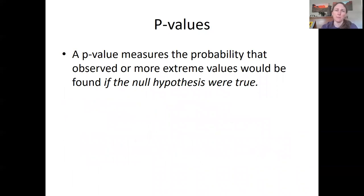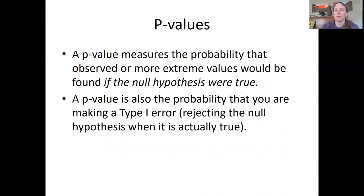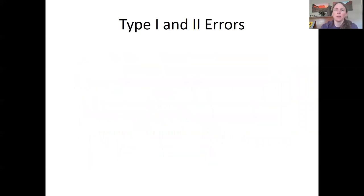A p value measures the probability that observed or more extreme values would be found if the null hypothesis were true. So that's a little bit tricky to understand. A p value is also a probability that you're making what's called a type one error when you're accidentally rejecting the null hypothesis when it's actually true. So type one and type two errors. I'm just going to take a minute to explain them.